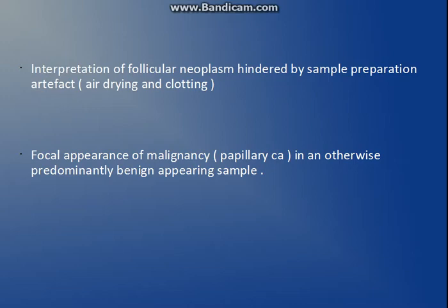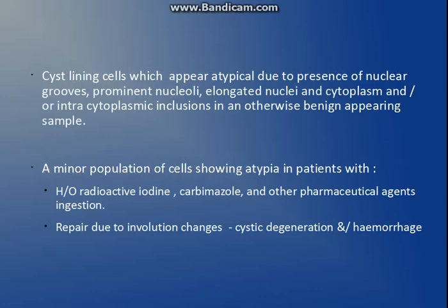Another criterion is focal appearance of malignancy — papillary carcinoma features in an otherwise benign-appearing sample. That means focal presence of nuclear grooves and focal clearing of nuclei is present, but the predominant sample is benign. Also, sometimes when we aspirate a cyst, we see that some cells appear atypical — the whole population is mostly benign but a few cells lining the cyst can show nuclear grooves and prominent nuclei.